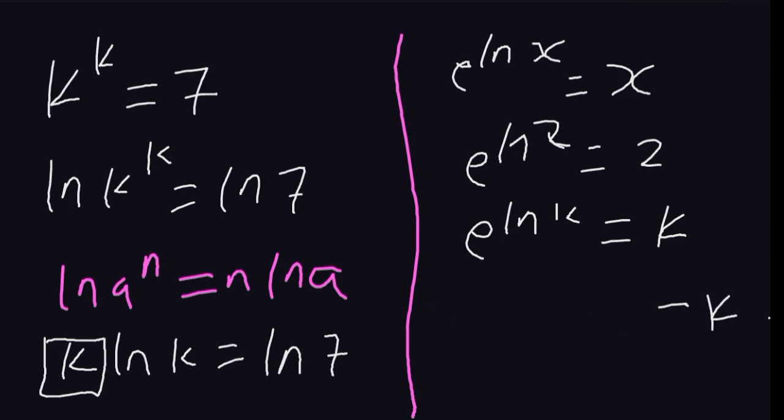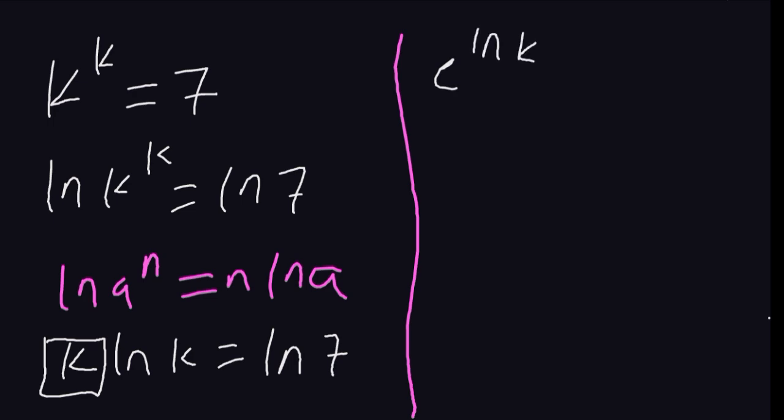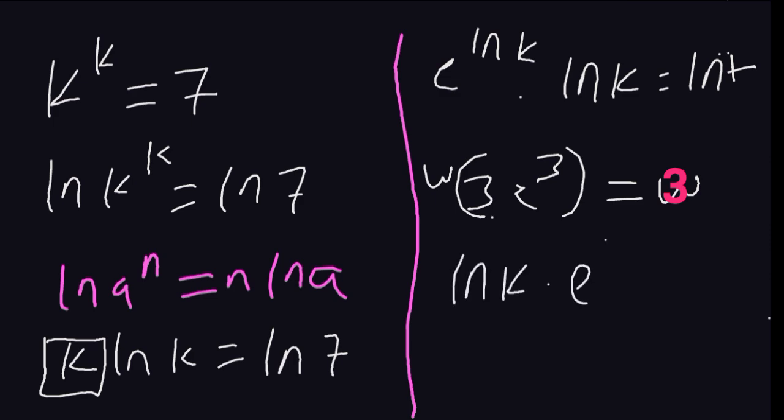So we are going to have e to the ln of k multiplied by the ln of k equals the ln of 7. We shall have the ln of k multiplied by the exponent of the ln of k equals the ln of 7.